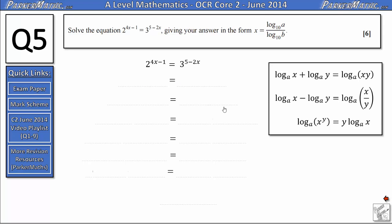So the first thing we're going to do is take logs of both sides here. So I'm going to get log of 2 to the power of 4x minus 1 equals log 3 to the power 5 minus 2x.